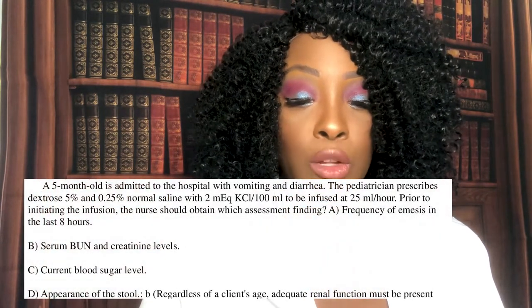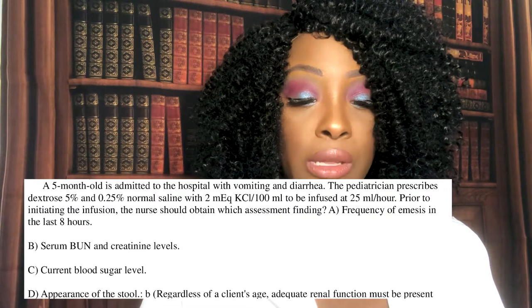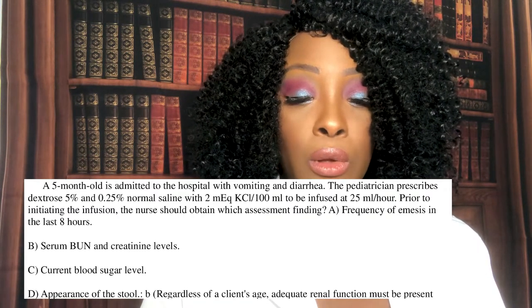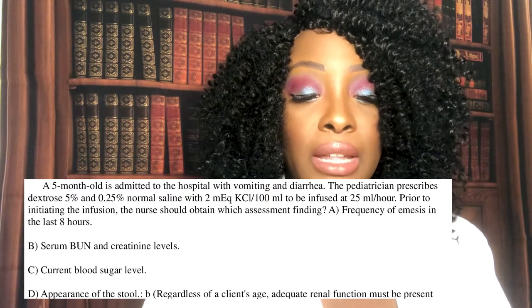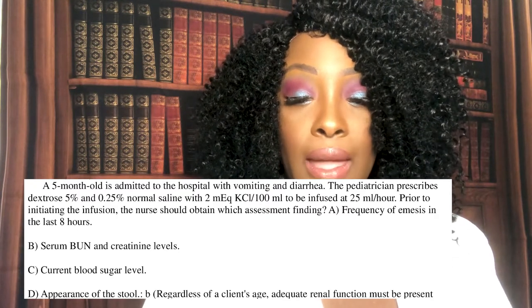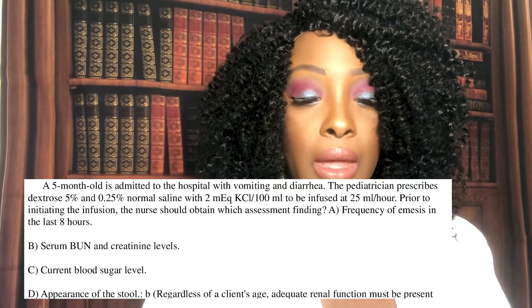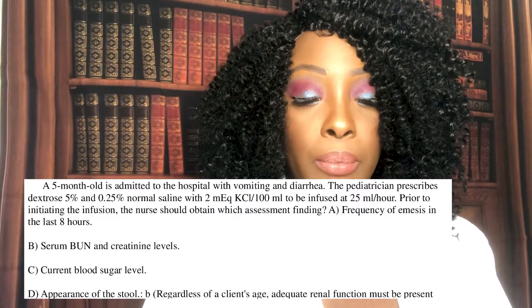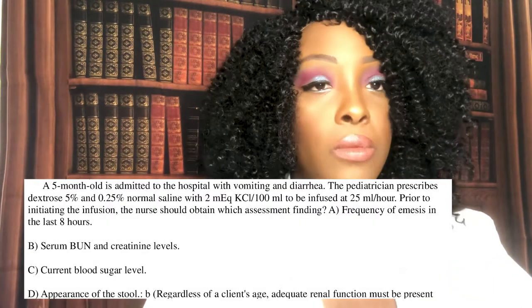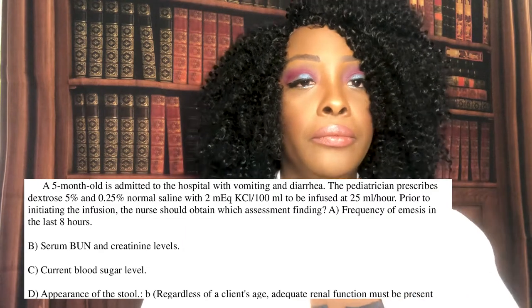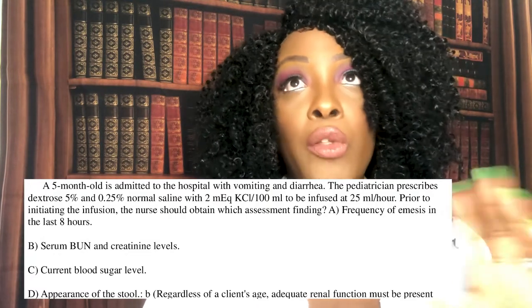Question seven: A five-month-old is admitted with vomiting and diarrhea. The pediatrician prescribes dextrose 5% and 0.25 normal saline with 2 mEq of potassium chloride per 100 mL to be infused at 25 mL per hour. Prior to initiating the infusion, the nurse should obtain which assessment finding? A) Frequency of emesis in the last eight hours. B) BUN and serum creatinine. C) Current blood sugar level. Or D) Appearance of the stool. The correct answer is B — BUN and creatinine.